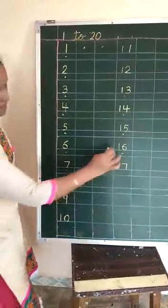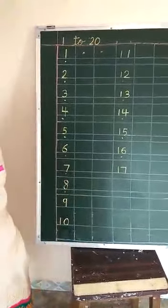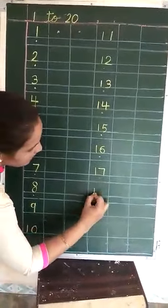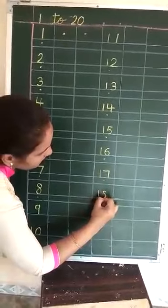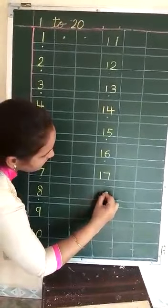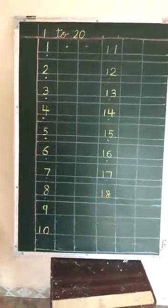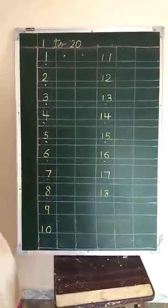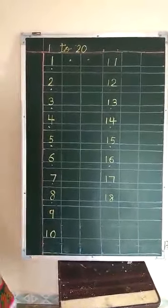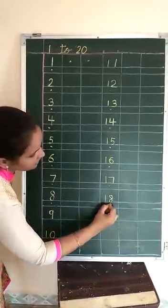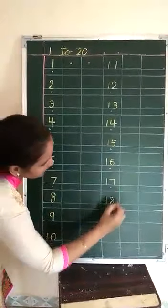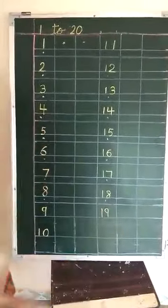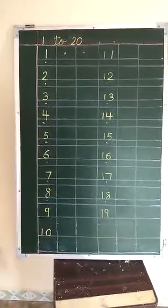After 17, which number comes? 18. Put 1 dot. Write down 18. After 18, which number comes? 19. Put 1 dot. Write down 19.